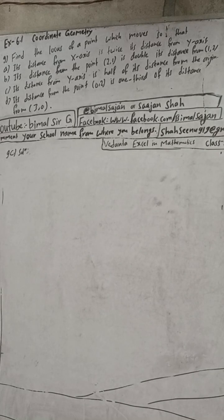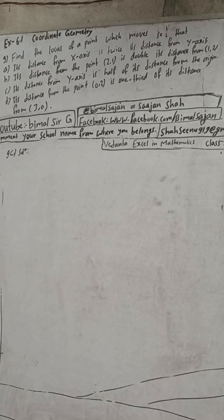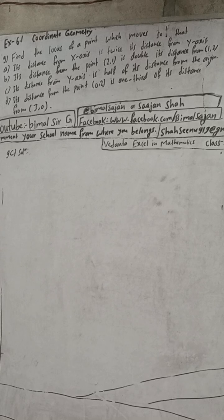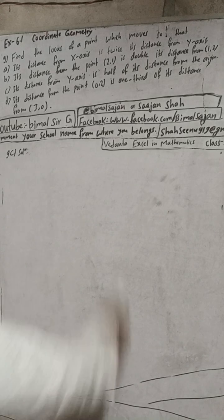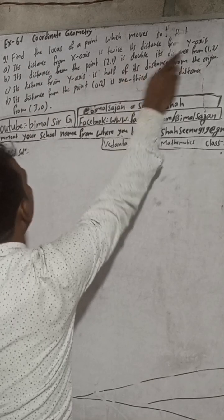Hi class 9 and 10 students, welcome back to Bimal Sarji YouTube channel. This is question number 9C solutions, exercise 6.1, coordinate geometry, class 9 optional mathematics. The question is: find the locus of a point which moves so that its distance from the y-axis is half of its distance from the origin.